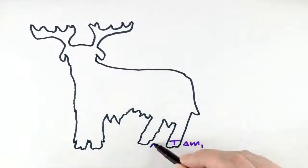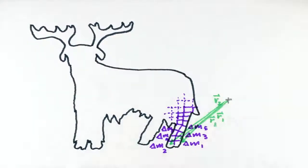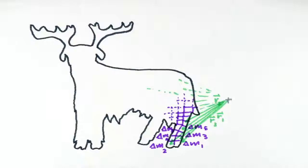We divide up the object into a large collection of small pieces we can treat as point masses of mass delta m sub i. We multiply the position vector r sub i of each piece by its mass and add up all the pieces and divide by the total mass.